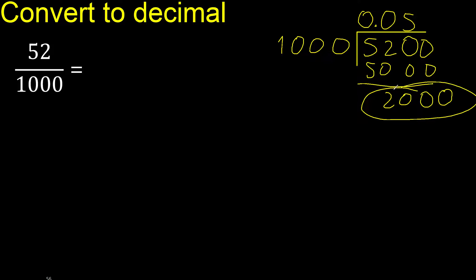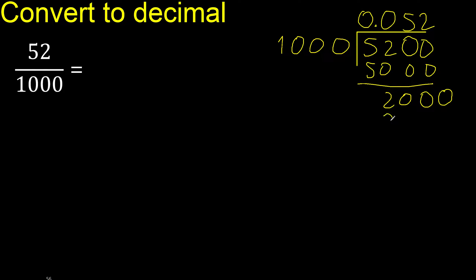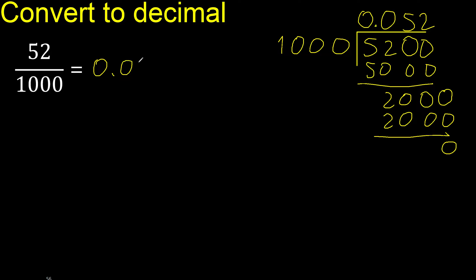2000. 1000 multiplied by which number? Multiplied by 3 is 3000 — is greater. Multiplied by 2 is 2000 — ok, subtract 0. Remainder is 0, therefore finish.